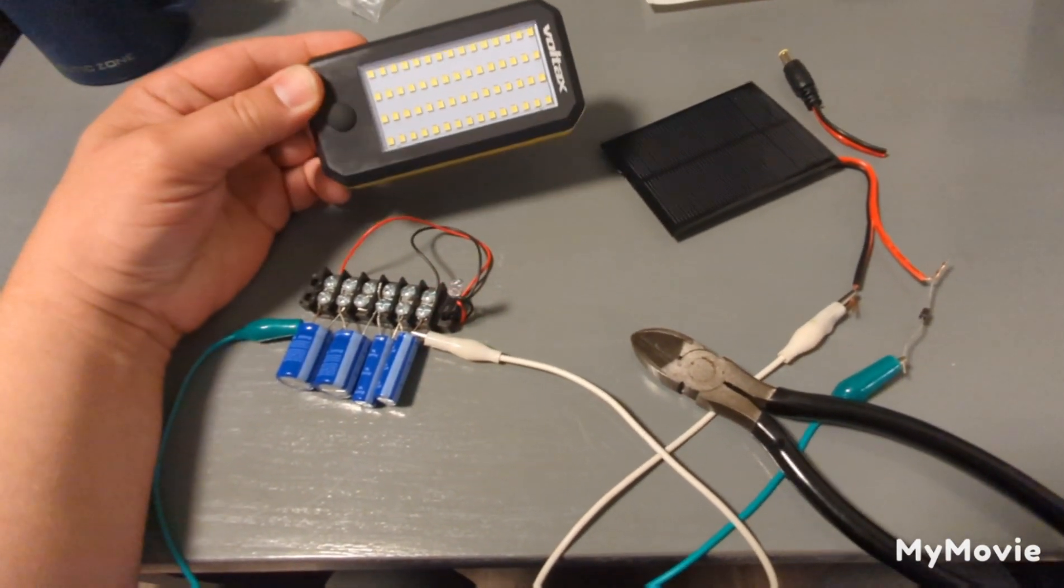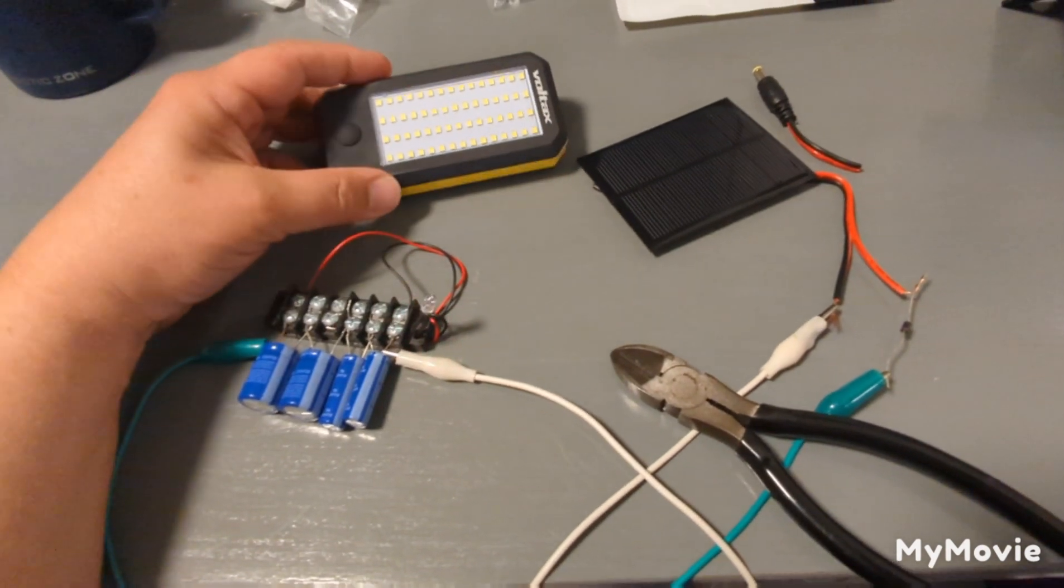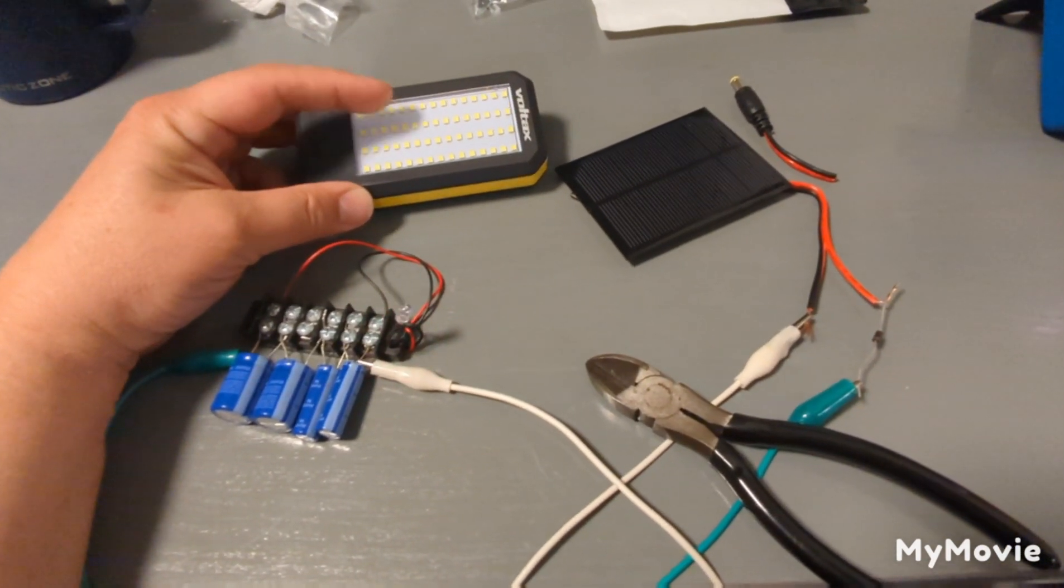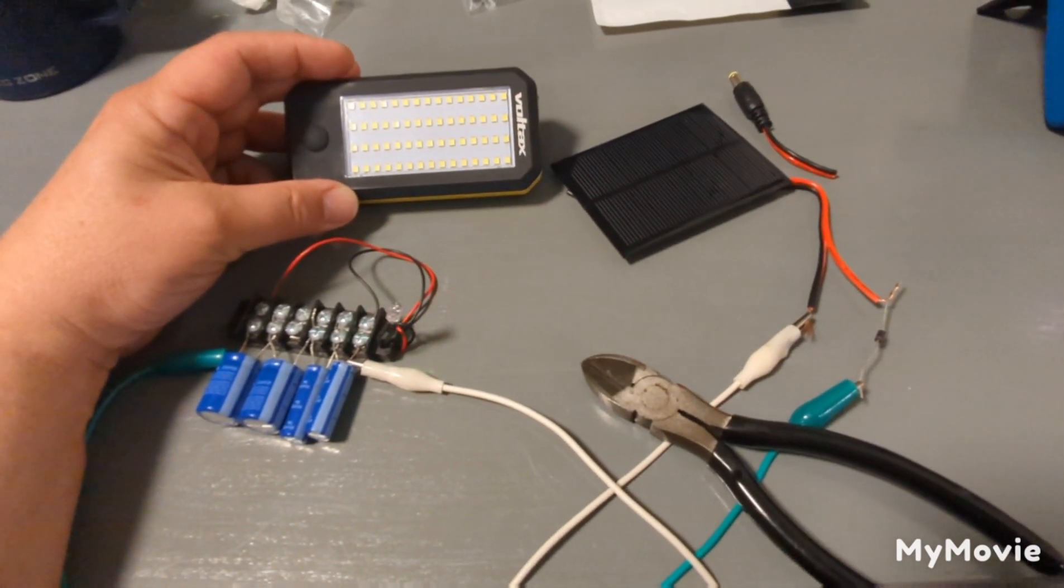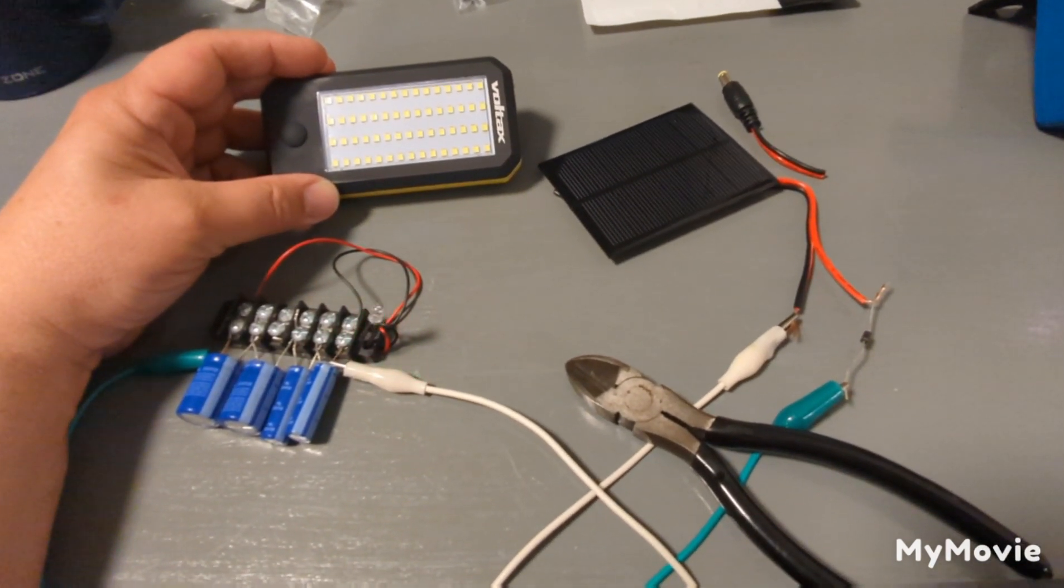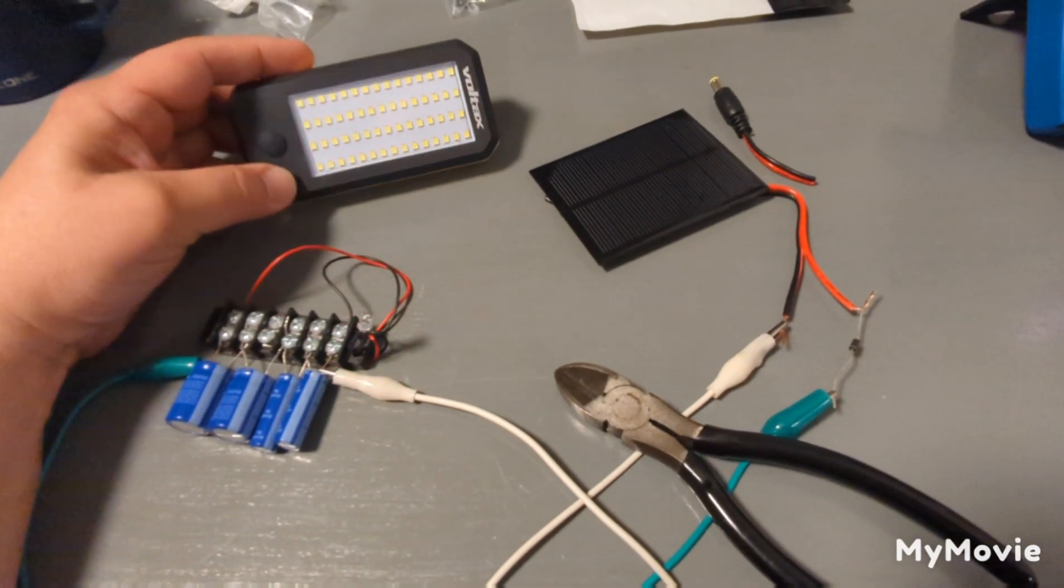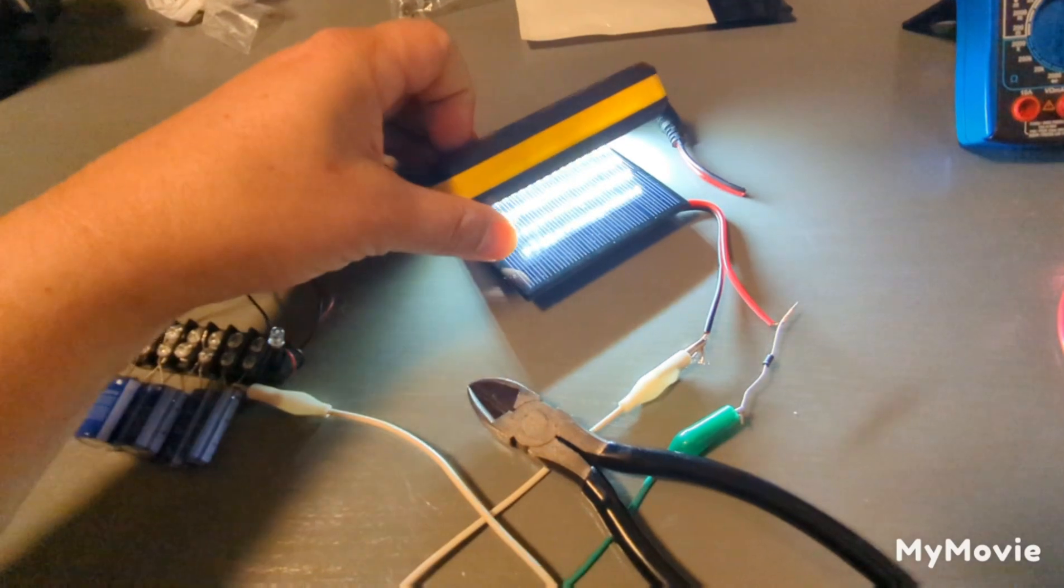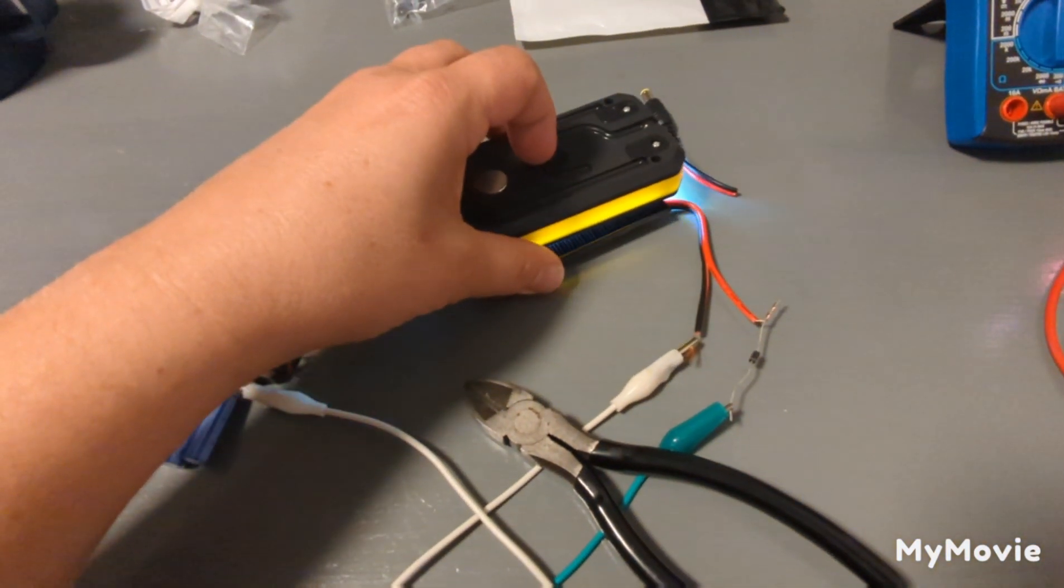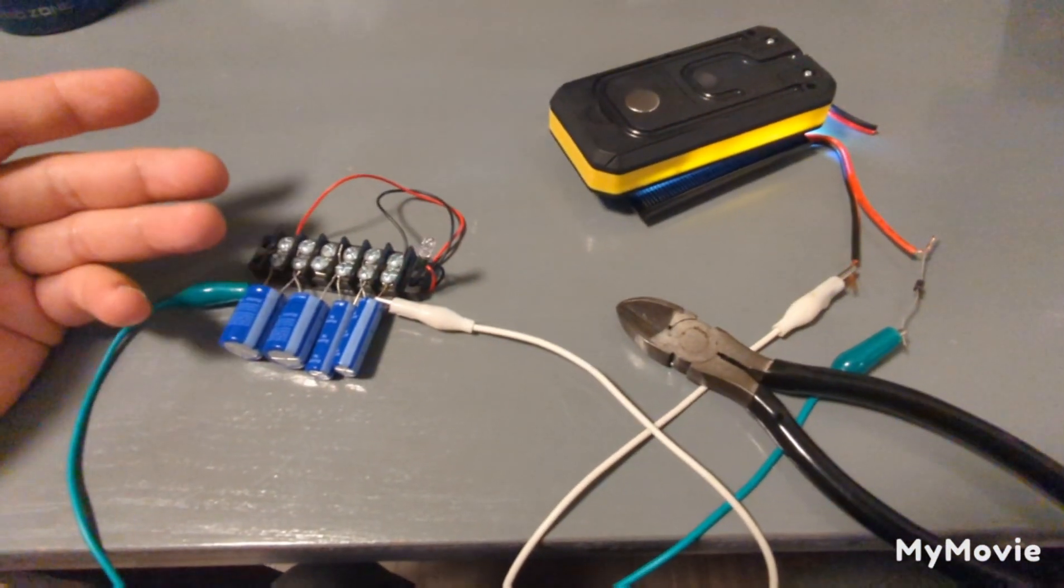The batteries last forever. It takes so little power to run these LED lights. Now they're getting so good and they're so bright that you can actually get a pretty cool effect by just putting an LED light on the solar panel.